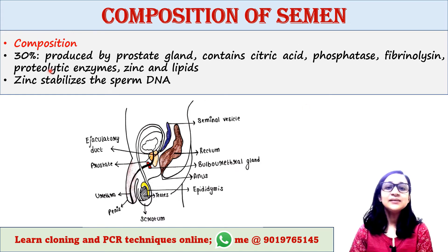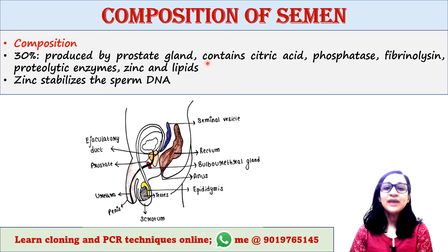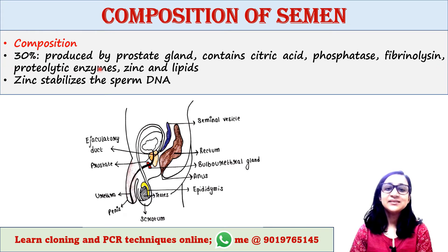30% of the fluid of semen is produced by the prostate gland, which consists of citric acid, phosphates, fibrinolysin, proteolytic enzymes, zinc, and lipids. The zinc stabilizes the sperm DNA.